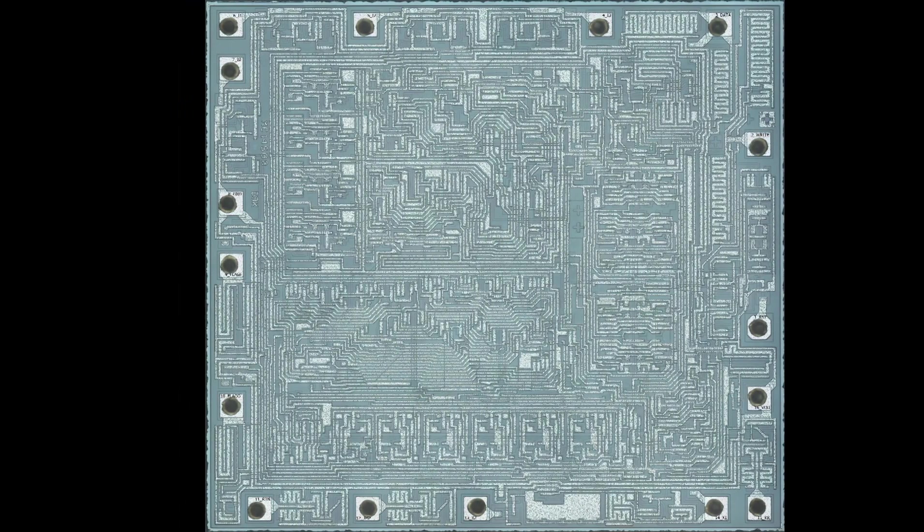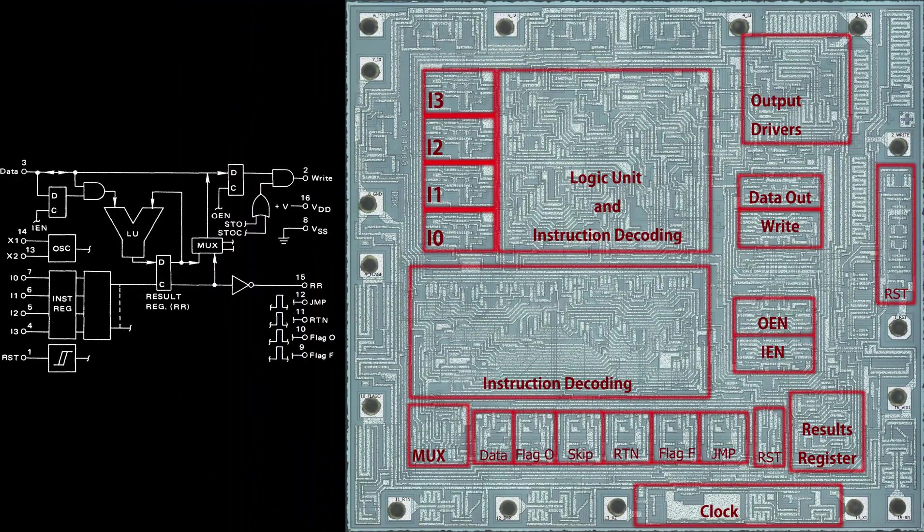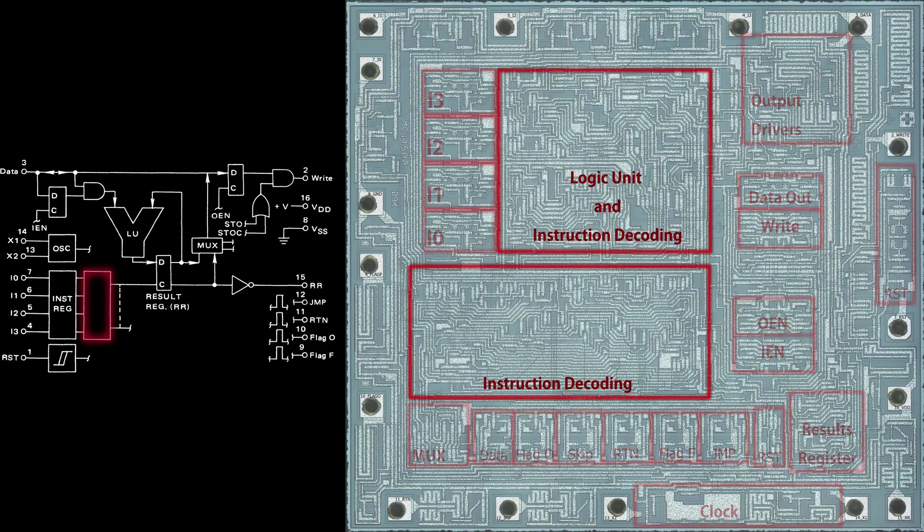And so when John sent us the de-layered picture of just the silicon, things started to become a little clearer because now I could see what was underneath all of those metal traces. And things started to get difficult because now I was trying to discover where actual transistors were. But Ken, being the absolute wizard he is, actually identified a large majority of these pieces.